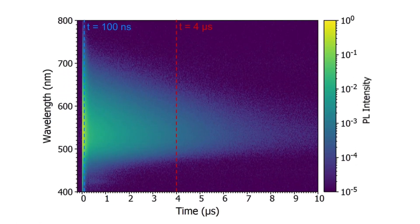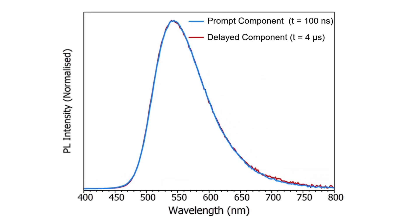To obtain the spectra of the prompt and delayed components, a time-resolved emission spectroscopy scan was acquired in the software. This measurement obtains the MCS decay at different wavelengths and displays them as a 2D color map. It is possible to take a slice of the data to obtain the spectrum at a particular time. The emission spectra at 100 ns, corresponding mainly to the prompt component, and at 4 microseconds, corresponding to the delayed component, are shown. The prompt and delayed components are identical, indicating that the delayed emission arises from the singlet state and therefore corresponds to TADF, as opposed to phosphorescence.